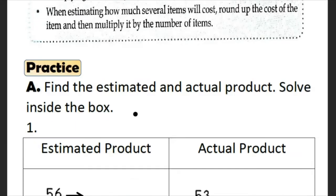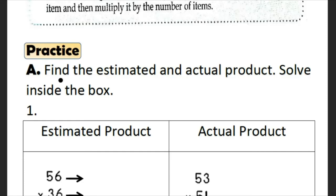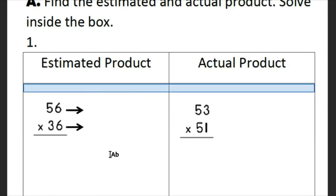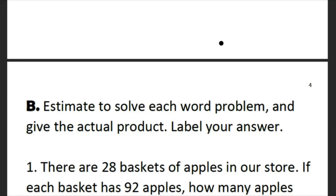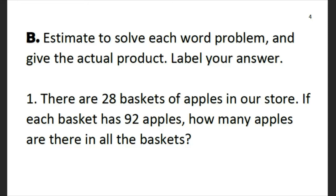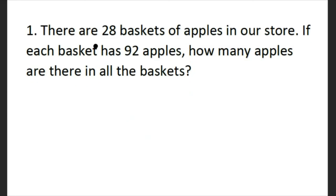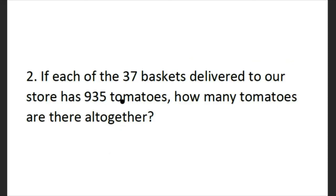Now let's practice. On activity A, you have to find estimated and actual product. Solve inside the box. This column is for estimated product and the second column is for actual product. Next, let's proceed to the next page. In this activity, you have to estimate to solve each word problem and give the actual product. Label your answer. You have word problem 1 until 2.